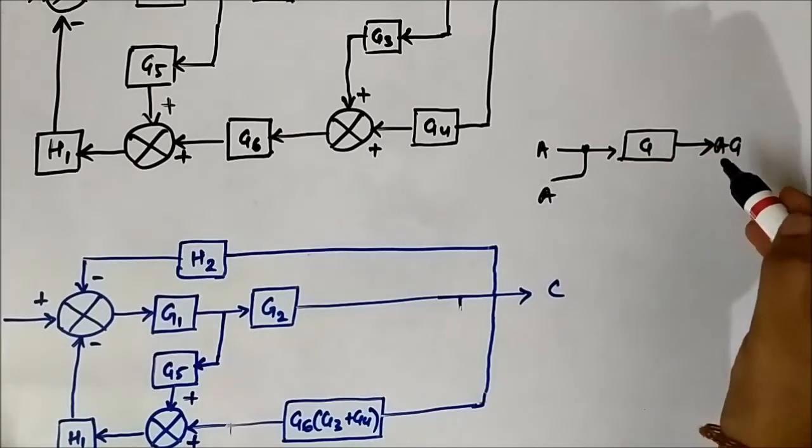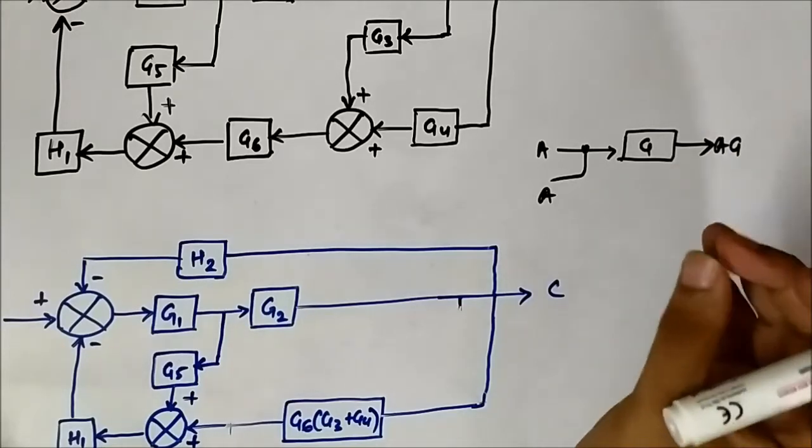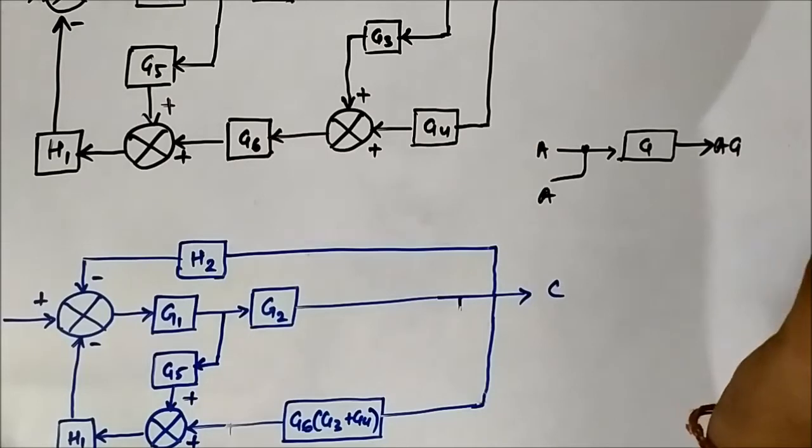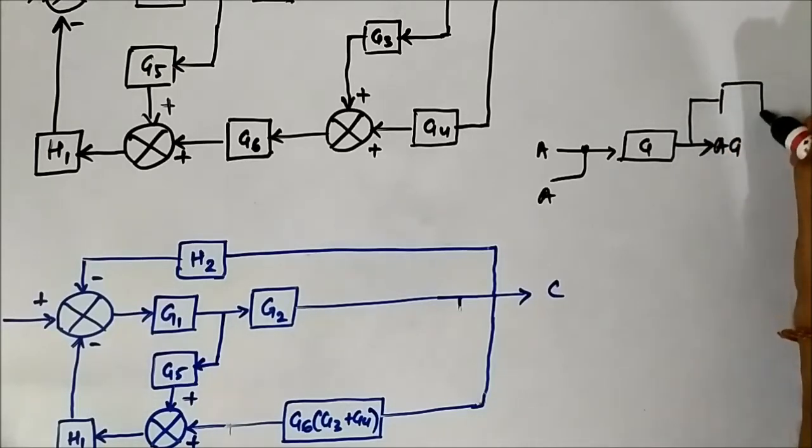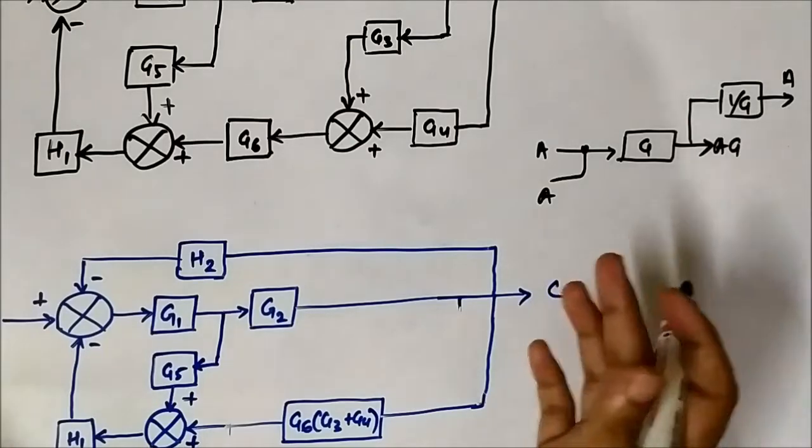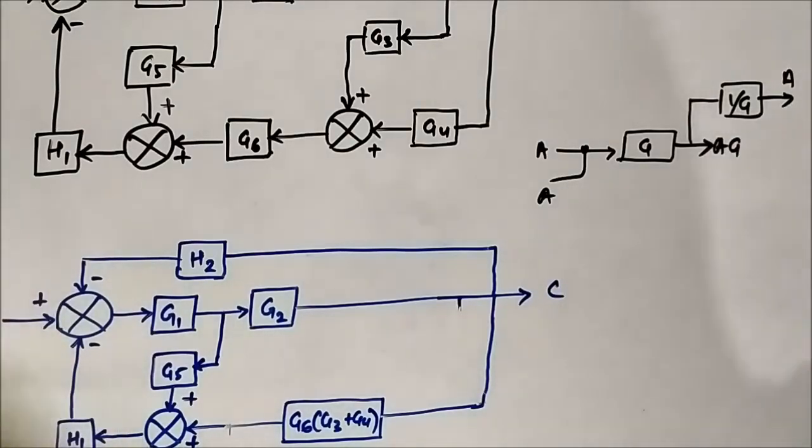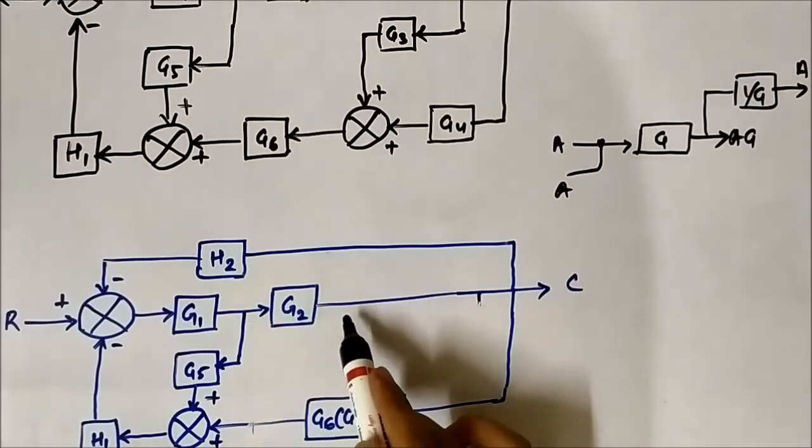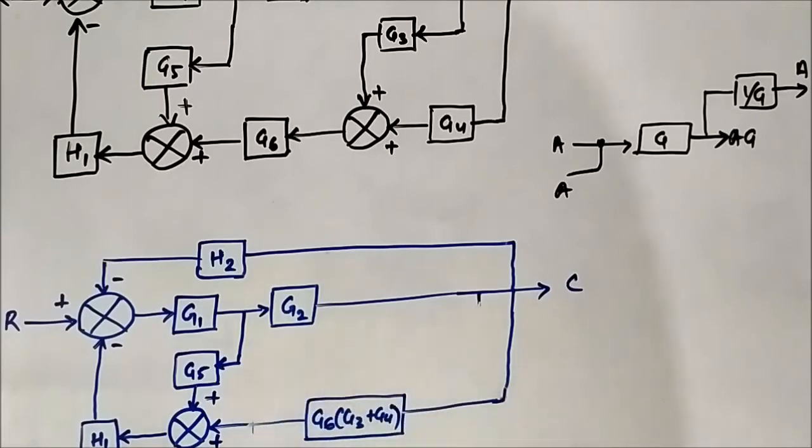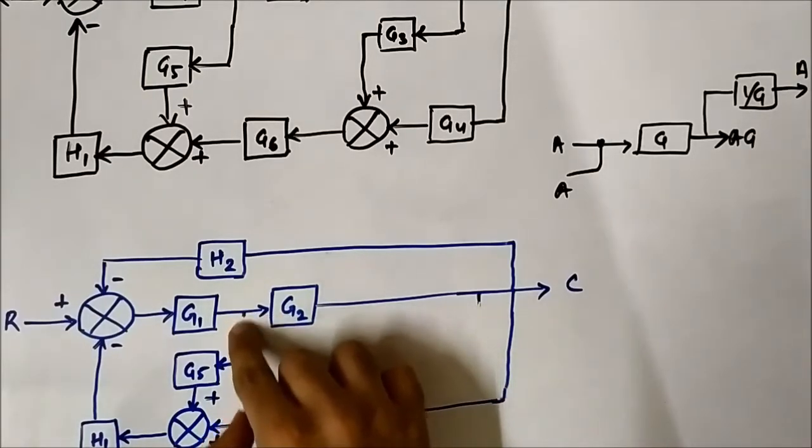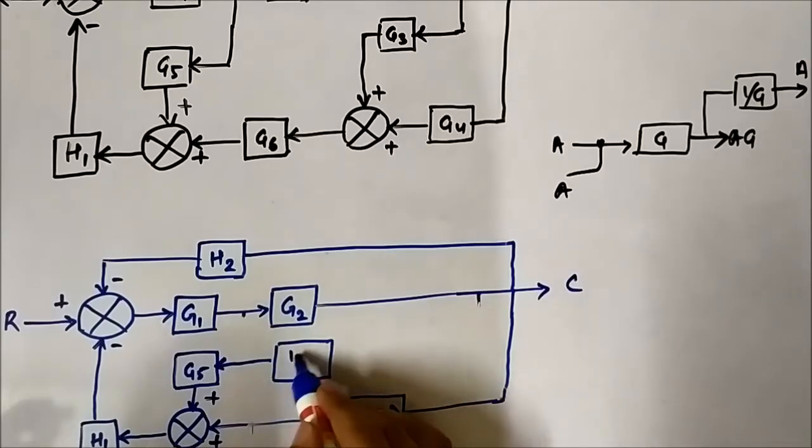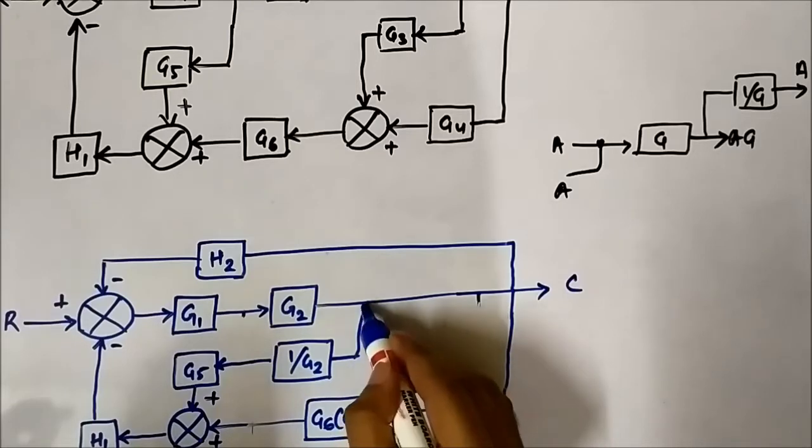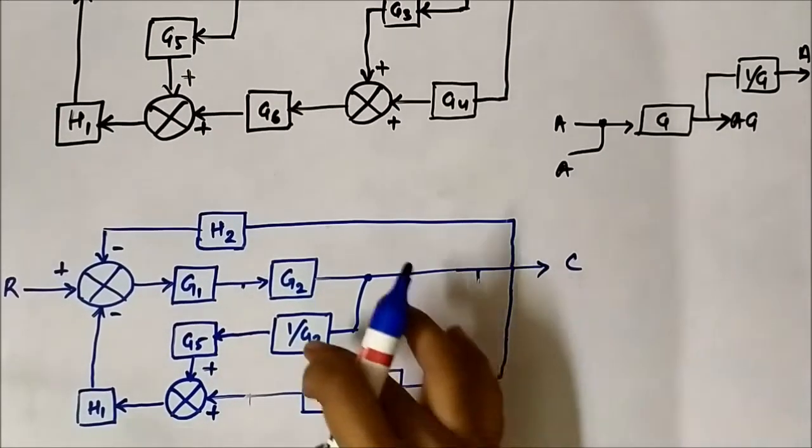When we shift a takeoff point, the value of the takeoff point, the signal value, should remain unchanged. If we shift it here, its value should remain unaltered. So the value should be A here also. We can achieve that by connecting a 1 by G block. It will be A again because AG multiplied with 1 by G will be A. Here also we will do a similar thing. When we shift it here, we will connect a 1 by G2 block. When we shift this takeoff point here, we will multiply a 1 by G2 block and shift it here.